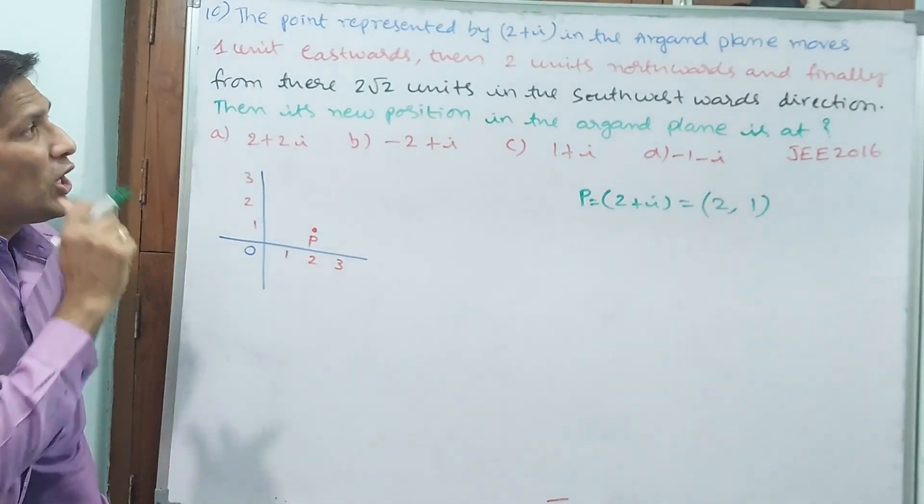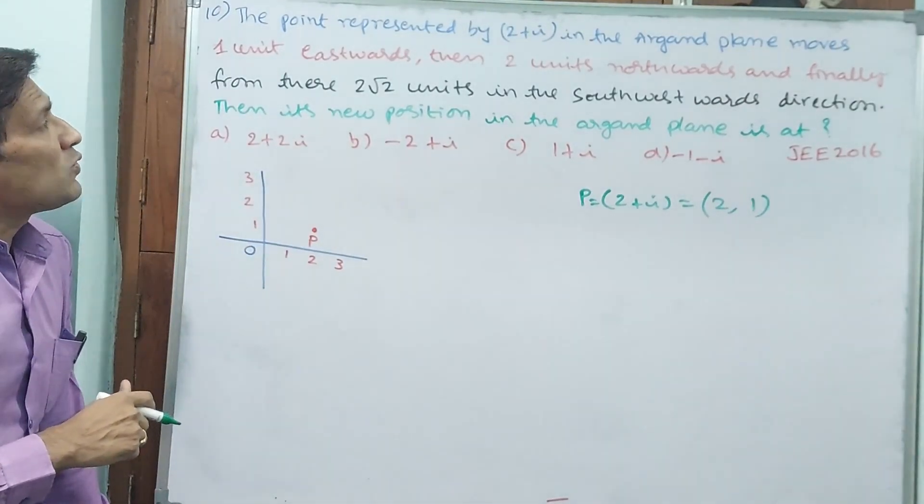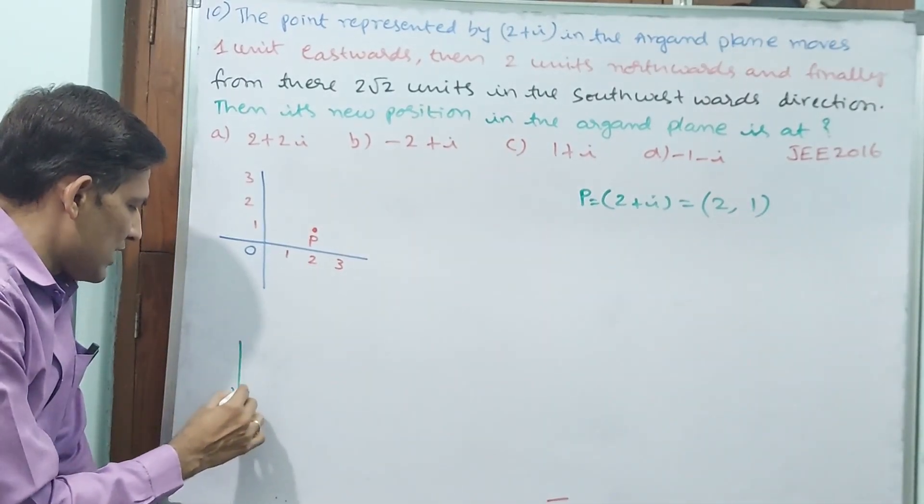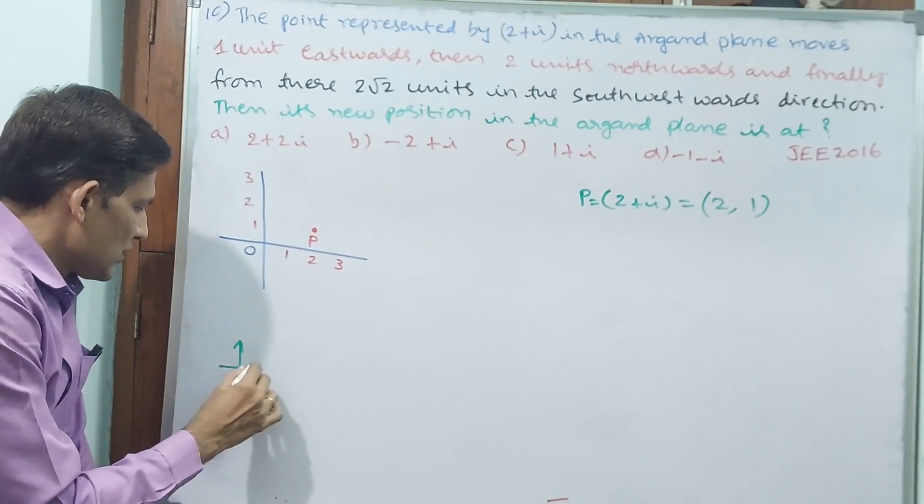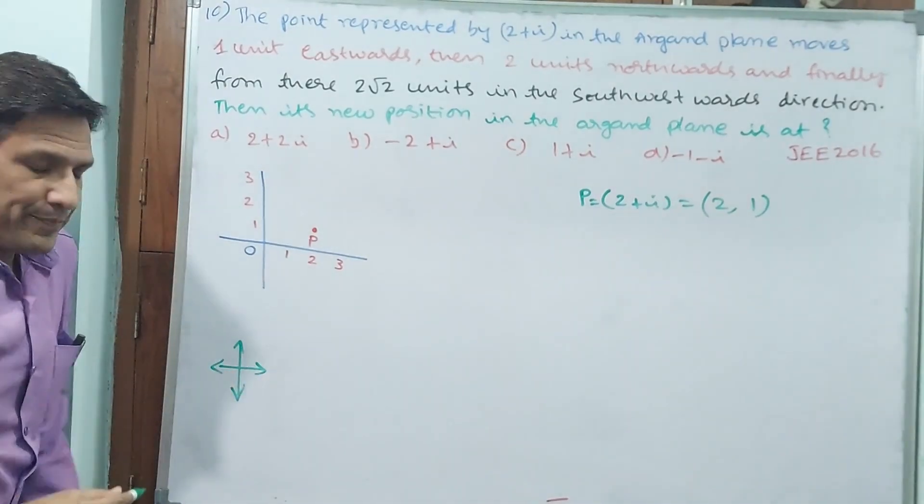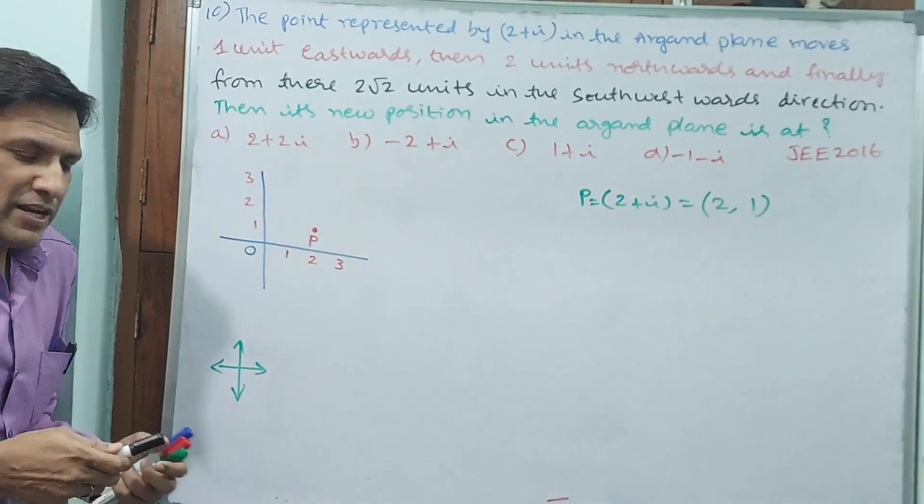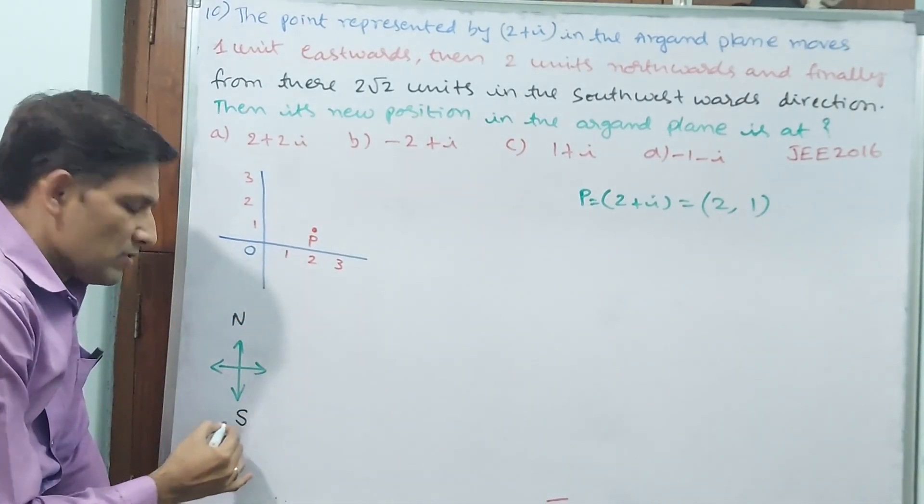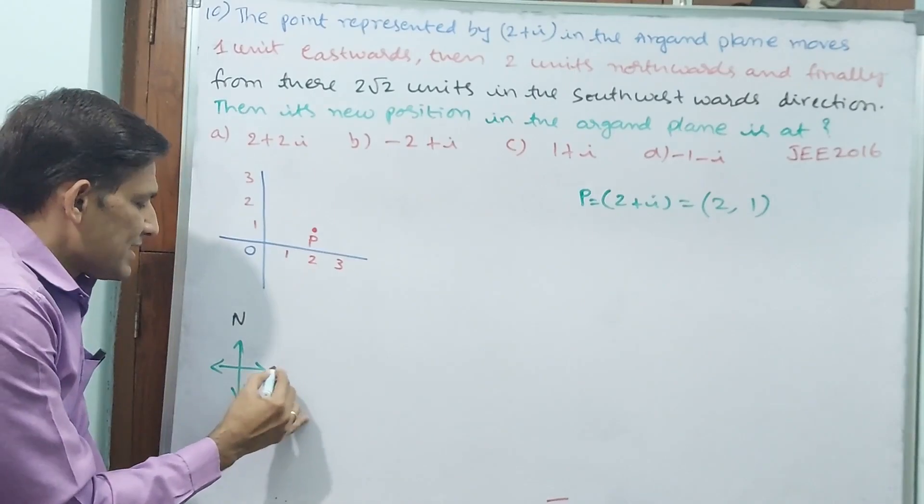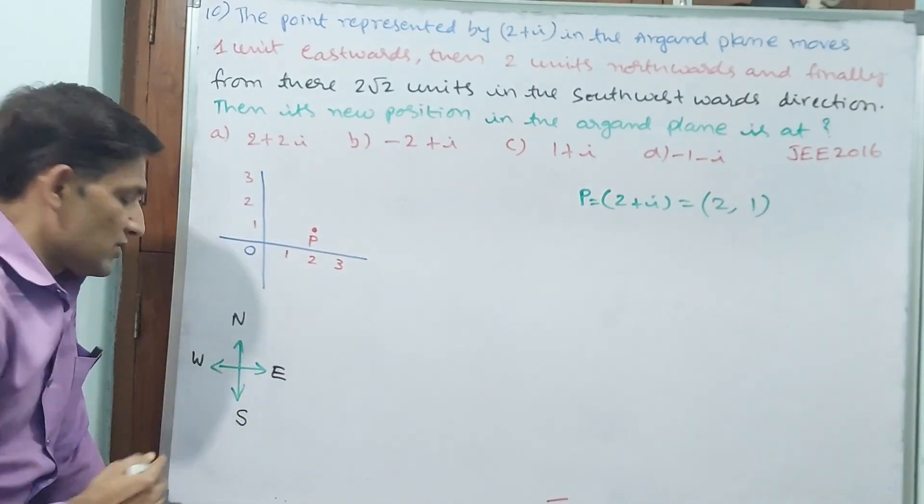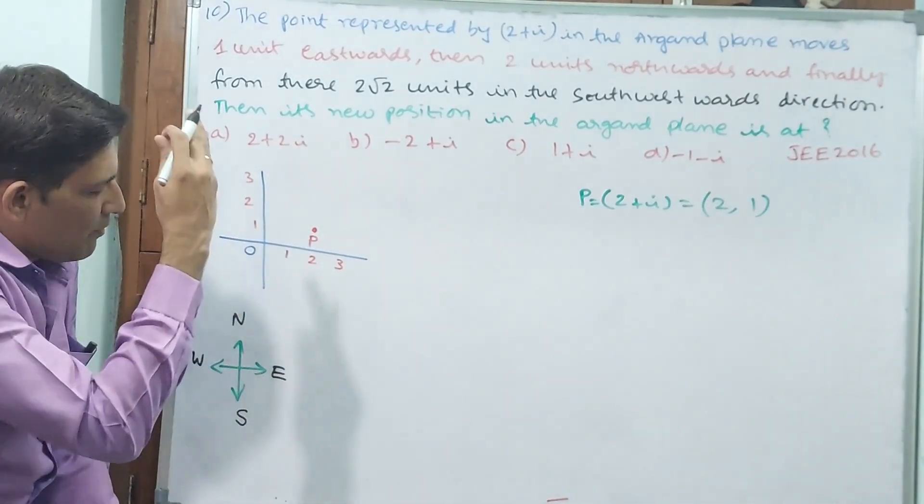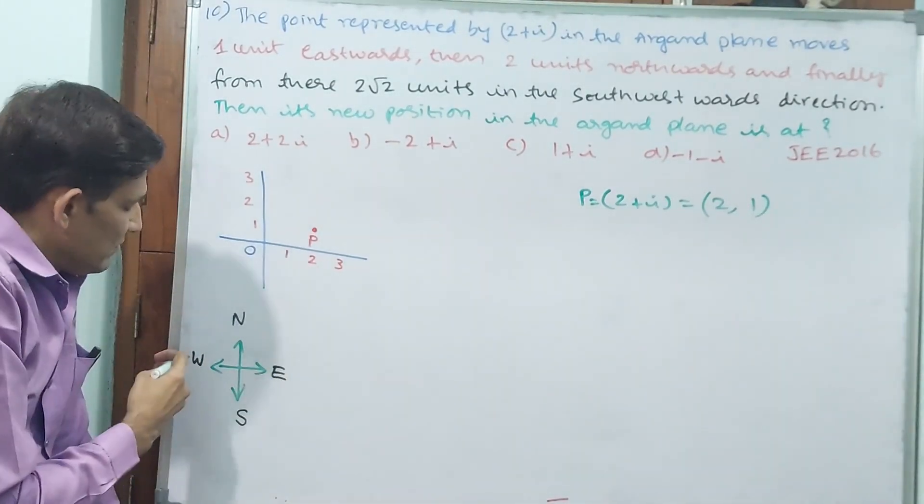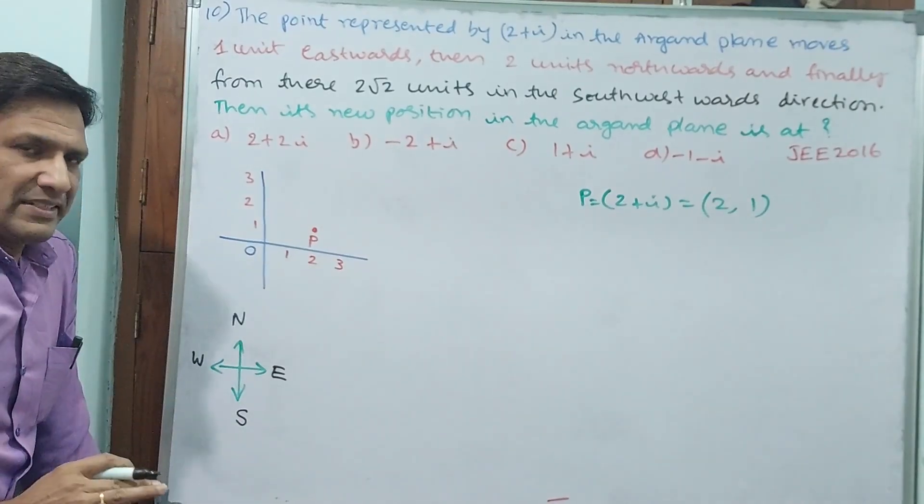Now go back. In the Argand plane, moves 1 unit eastwards. This direction is very important. You see here, something I am drawing, arrows. If you see any map, normally north will be top, south will be down, east will be right side, west will be left side. Top is north, south is down, east is right side, west is left side. This is standard practice.